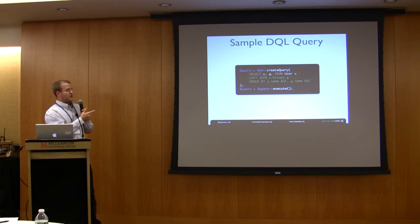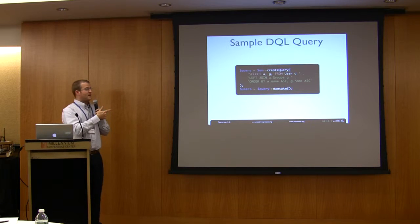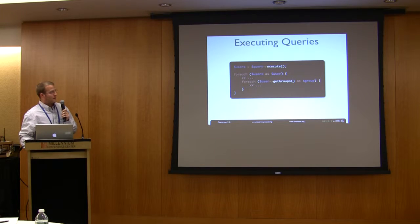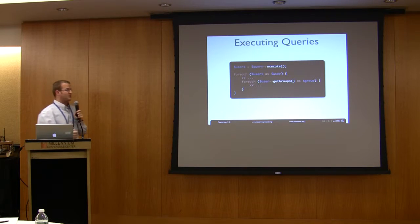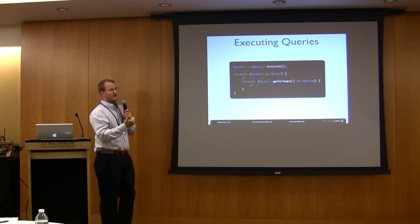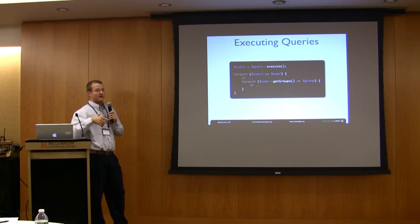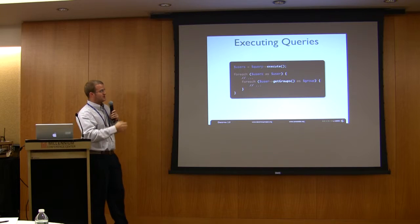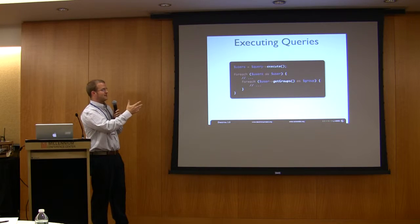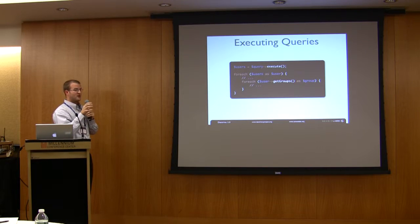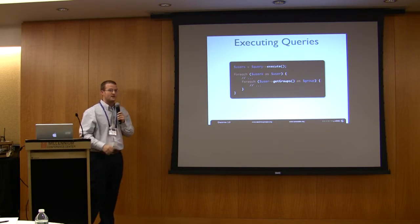The final SQL that it produces is going to have a left join to the user group table so that it can join those two together. If you notice how I work with this data — typically if you weren't using an object relational mapper, you'd have to loop over the users and loop over every user group to get to the group. This abstracts that so I can access the groups directly from the user, and the reference table is totally transparent to the developer.